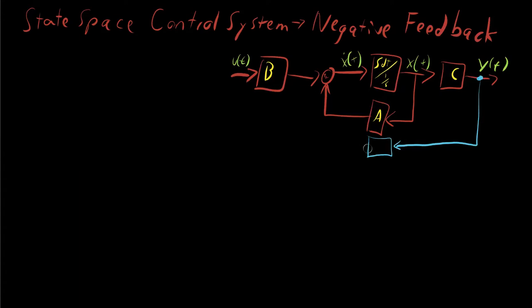You're going to take the output signal y of t multiplied by this matrix, and you're going to feed it back in as your control signal. This is going to equal u of t, and you're going to end up with a feedback loop. This matrix is usually called k. And typically, as engineers, we have control over k.